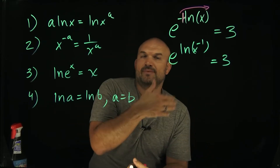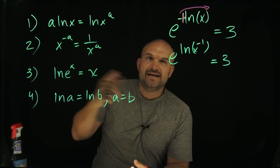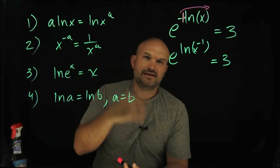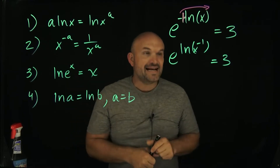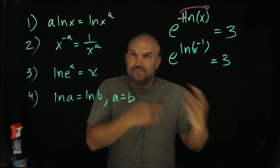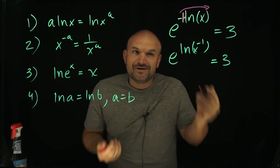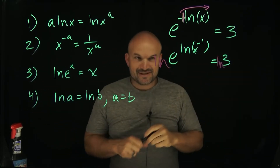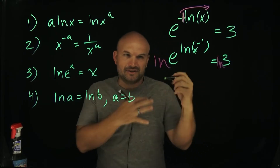You're going to take the log based on whatever the base is. When you have 10, you take log base 10; if it's 7, you take log base 7. When you have e as your base, you're going to take the natural logarithm of both sides. Just like when solving equations, whatever you do to one side you do to the other — make sure you take the log of both sides. Let's write this down a little bit cleaner now.